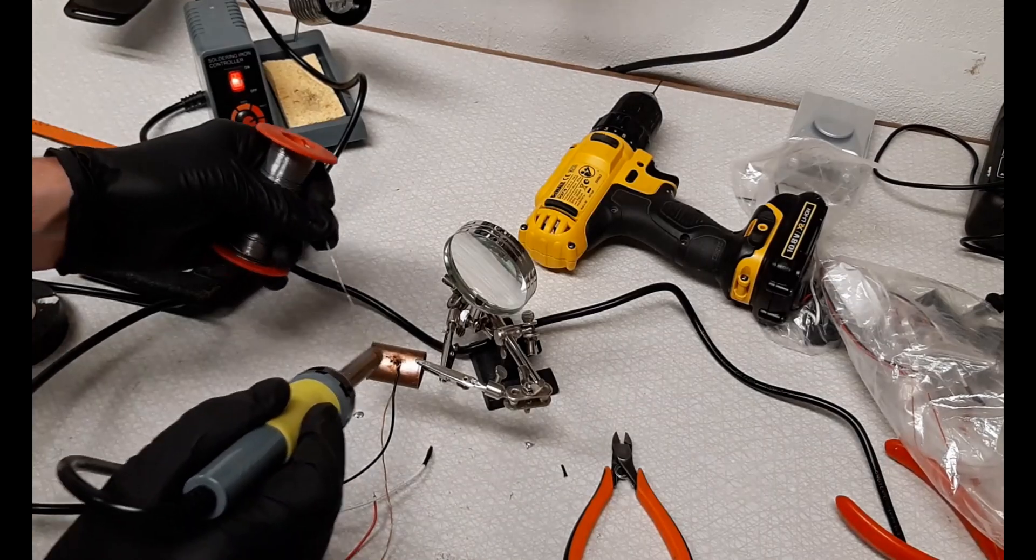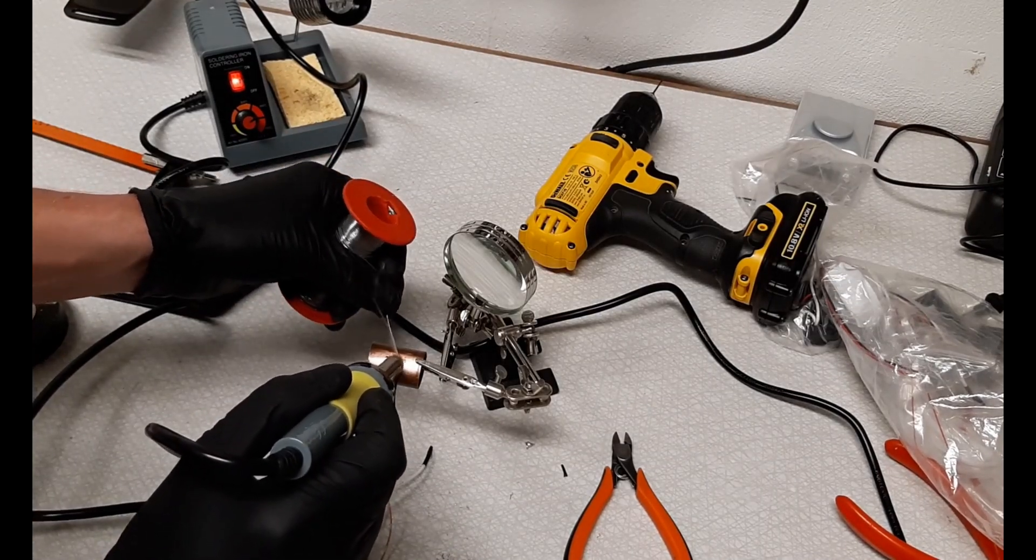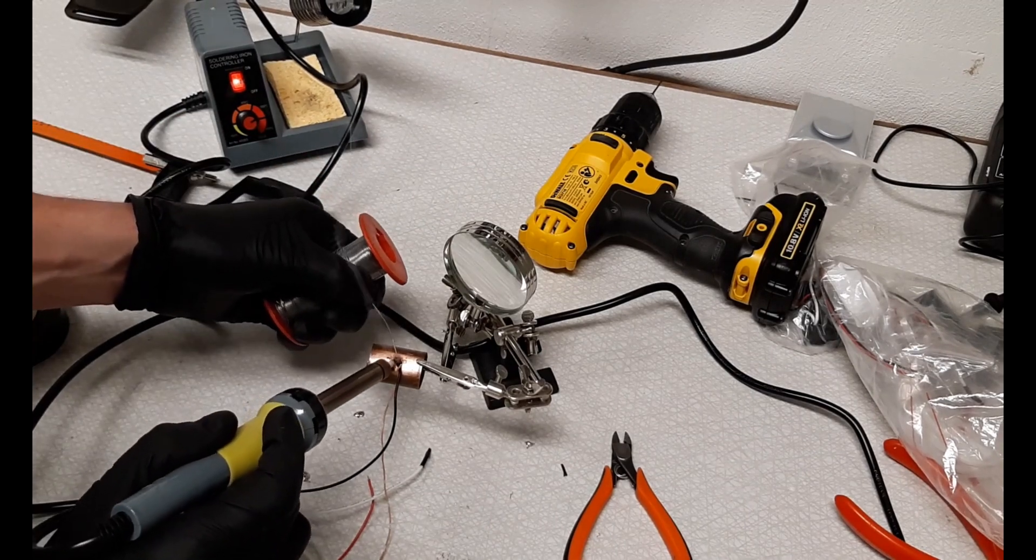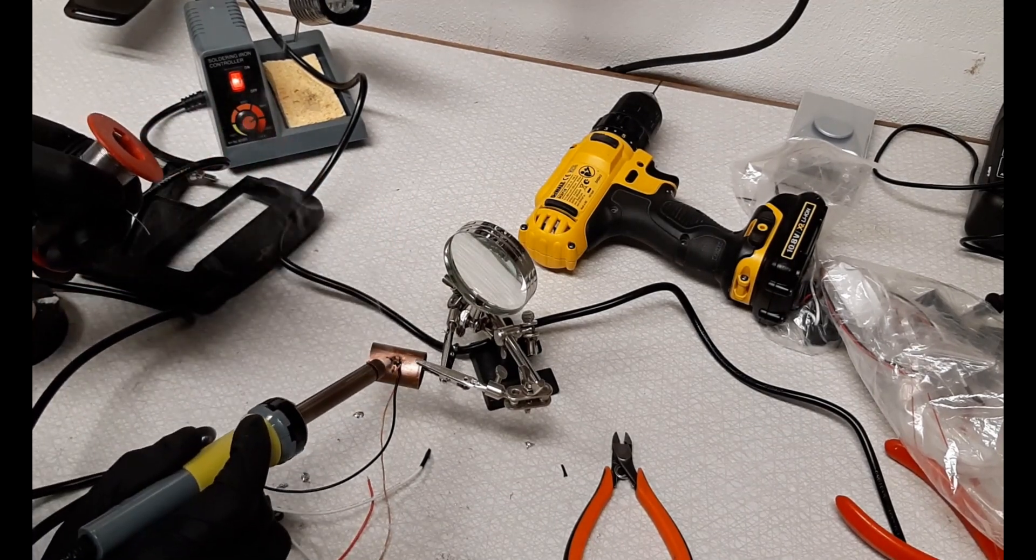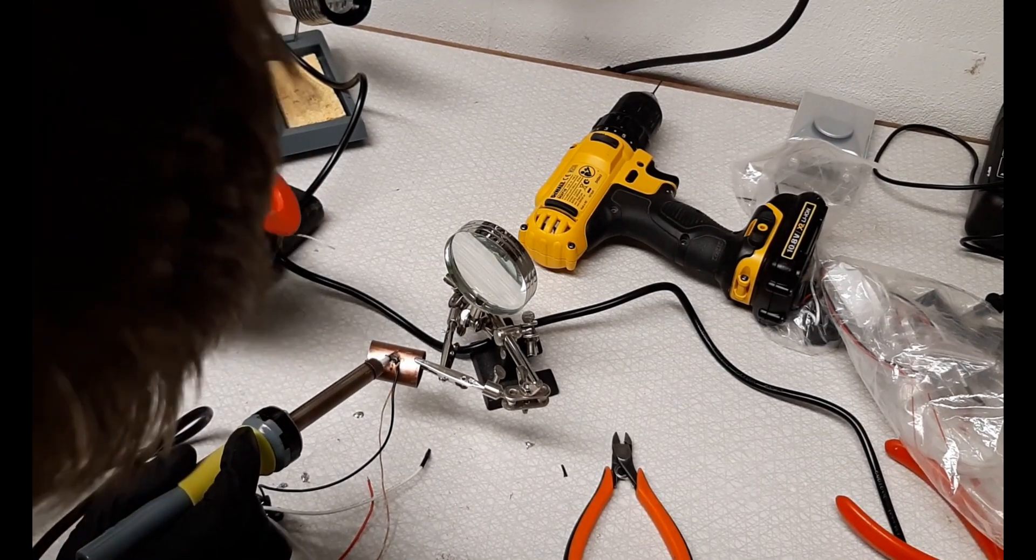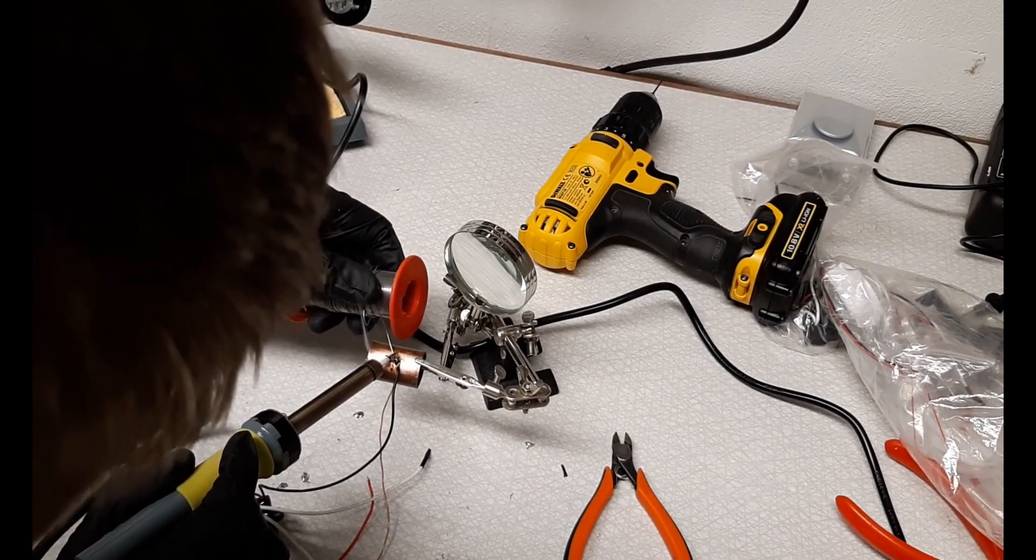I soldered one of the wires from the ion generator to the copper pipe. The other end of the ion generator is later going to be placed behind the copper pipe in the center to make the ion wind flow through the pipe.